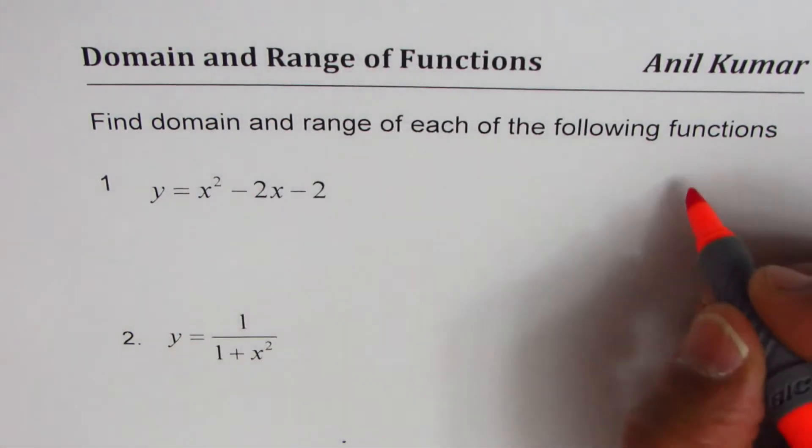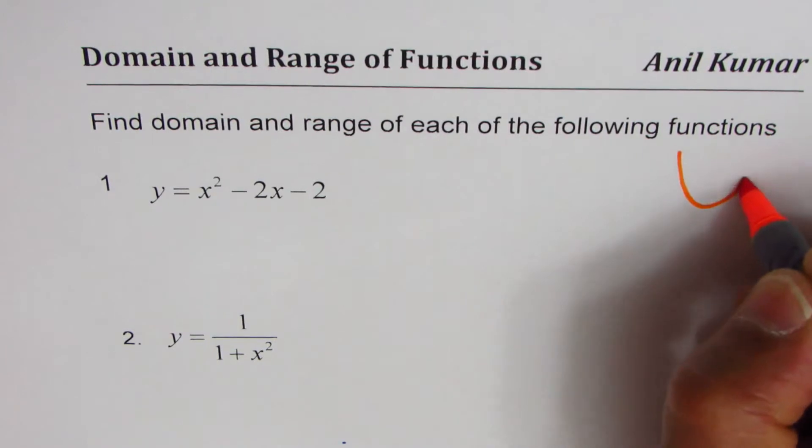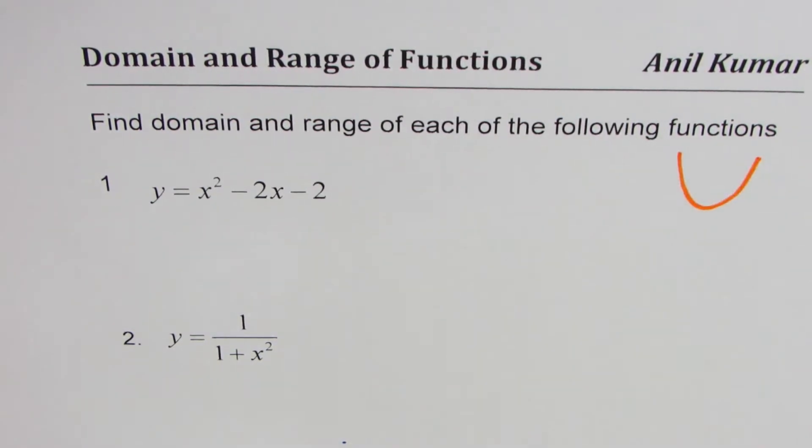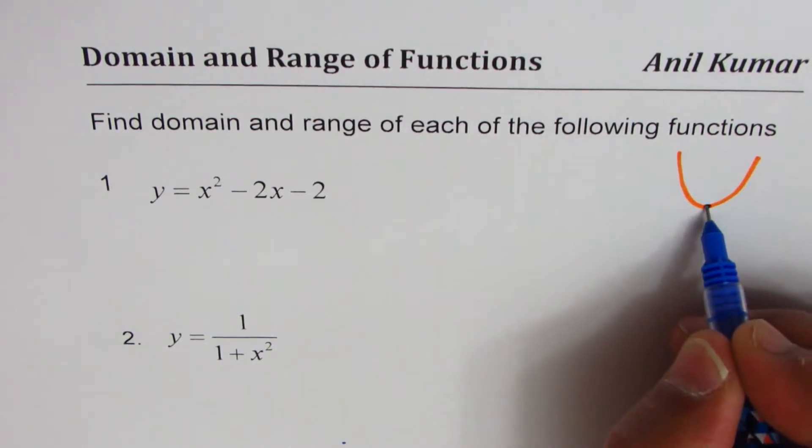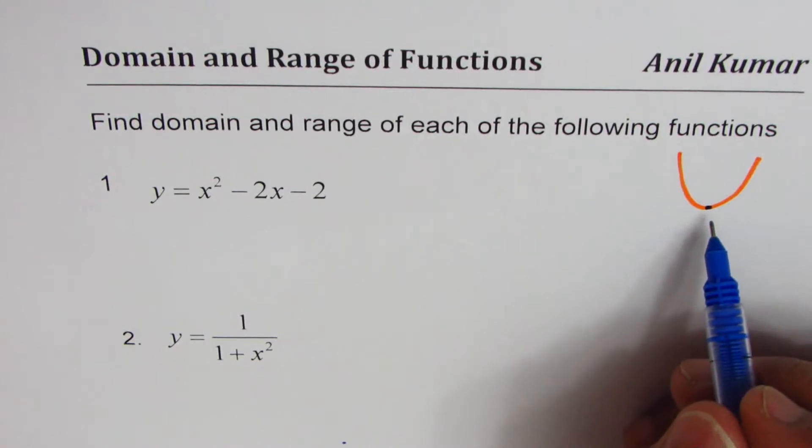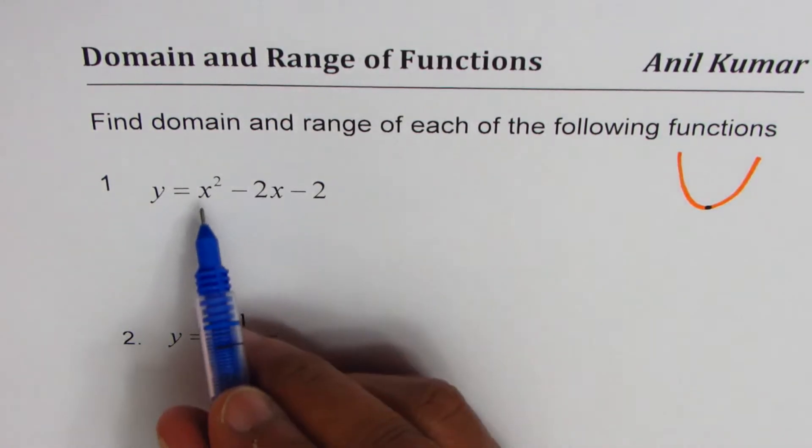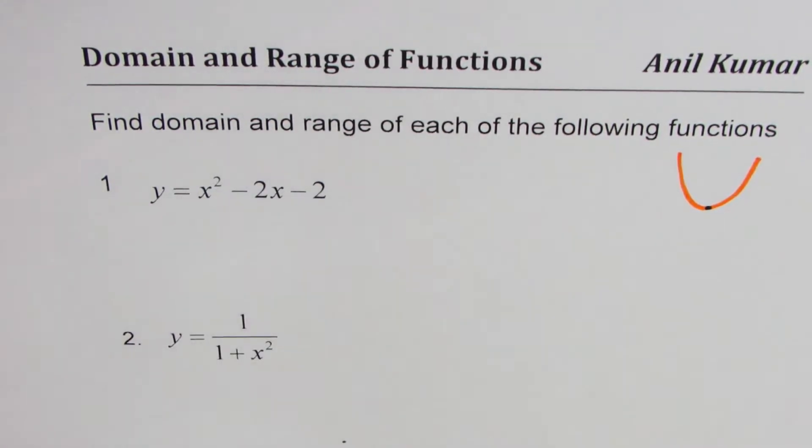So if you graph this, you'll get a parabola which opens upward. The idea here is to get the vertex, and the range is all values which are greater than or equal to the y value of this vertex. x squared with positive coefficient. So how do we find vertex?